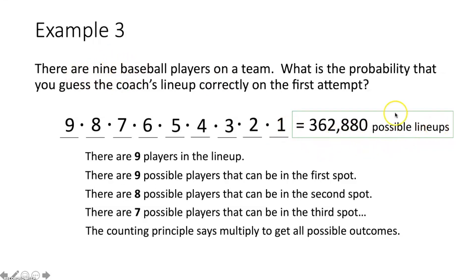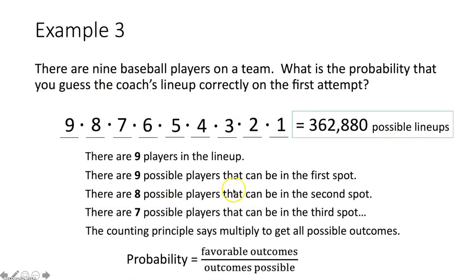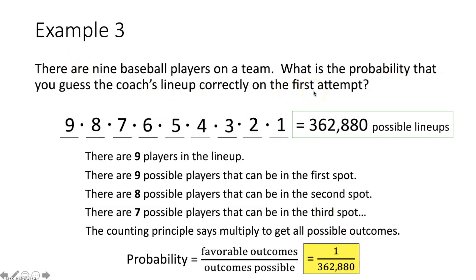The probability of guessing the coach's lineup correctly on the first attempt is the ratio of favorable outcomes — just one — over the total possible outcomes of 362,880. So the probability is one out of 362,880.